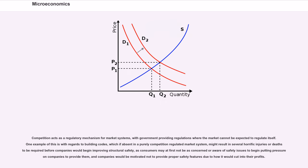Competition acts as a regulatory mechanism for market systems, with government providing regulations where the market cannot be expected to regulate itself. One example of this is with regards to building codes, which if absent in a purely competition-regulated market system, might result in several horrific injuries or deaths still being required before companies would begin improving structural safety, as consumers may at first not be as concerned or aware of safety issues to begin putting pressure on companies to provide them, and companies would be motivated not to provide proper safety features due to how it would cut into their profits.